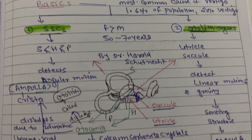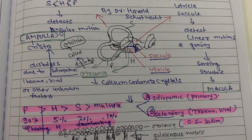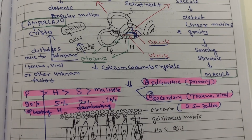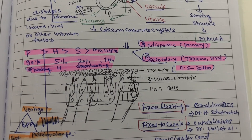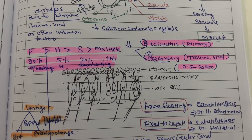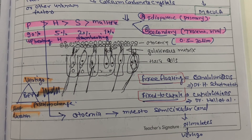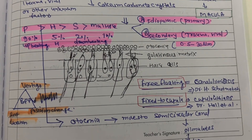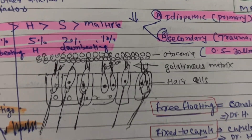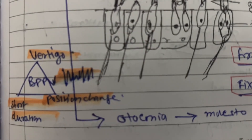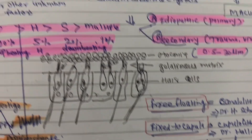If free-floating otoconia are present, that is called canalolithiasis. If they are attached to the cupula of the semicircular canal, this is called cupulolithiasis. In posterior semicircular canal involvement there is up-beating torsional nystagmus, in horizontal canal there is horizontal nystagmus, and in superior canal there is down-beating nystagmus. These otoconia in an abnormal location lead to vertigo of short duration on positional changes.